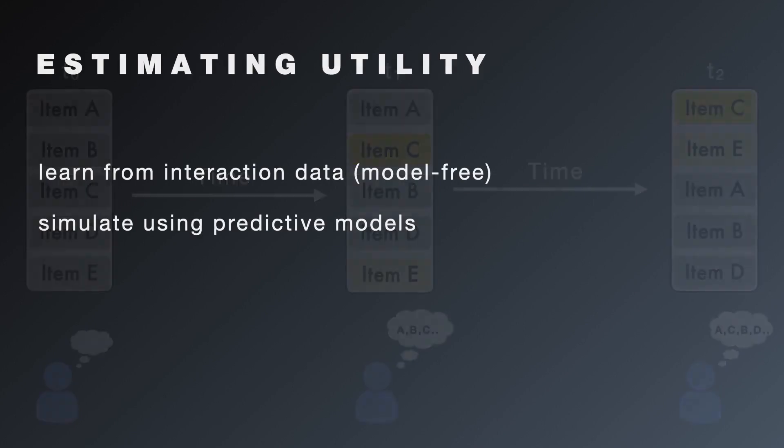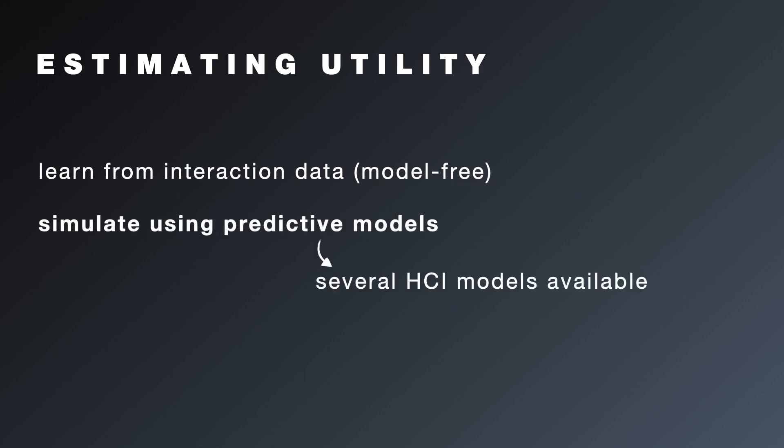To plan adaptations, we need a way to properly estimate the value of different states. This could be done by learning from interaction data or through simulation with predictive models. In our work, we adopt existing models that are readily available for tasks such as pointing, typing, menu search, among others.